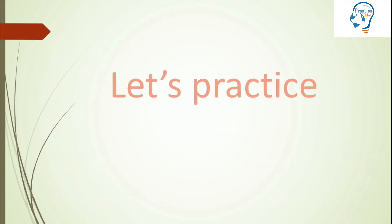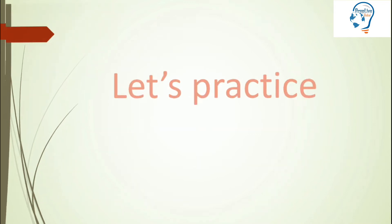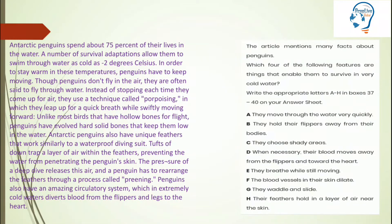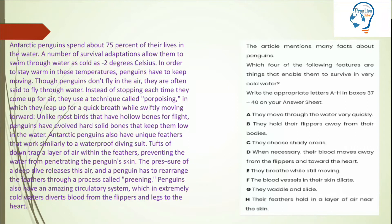Read that particular paragraph — in that paragraph you will find your options, and then come to the list and match the information. Let's practice this question type now. You have a paragraph and side by side you have questions also. The question reads: 'The article mentions many facts about penguins. Which four of the following features are things that enable them to survive in very cold water? Write the appropriate letters A to H in boxes 37 to 40 on your answer sheet.'